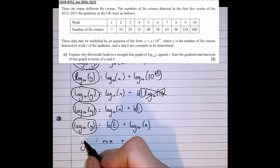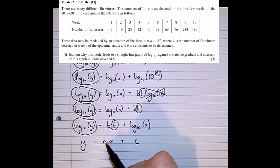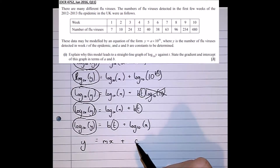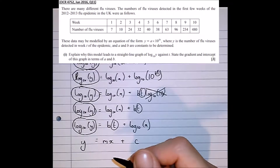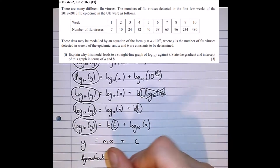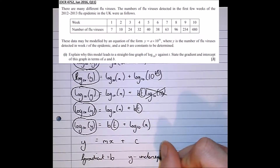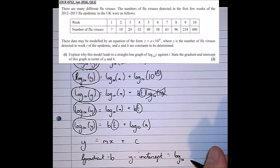So in this straight line form: y is represented by log base 10 of y, x is represented by t, the gradient m is b, and the y-intercept c is log base 10 of a. So to state the gradient and intercept in terms of a and b: the gradient is b, and the y-intercept is log base 10 of a.